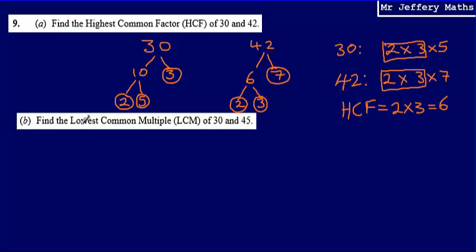For part B, we're asked to find the lowest common multiple of 30 and 45. So for this one, this one's a nice simple one to do. I'm just going to list multiples of 30.